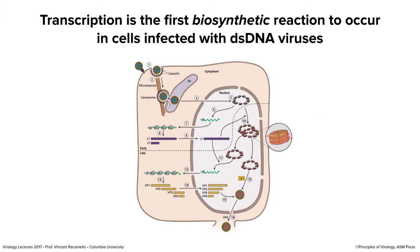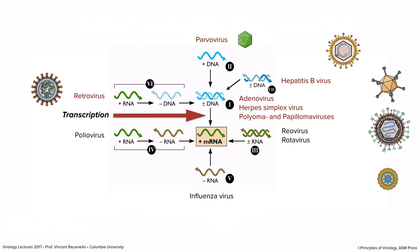The wording is very important: biosynthetic event and double-stranded DNA viruses. Because there are other viruses that don't have truly double-stranded DNA genomes. The double-stranded DNA viruses include adenoviruses, herpes simplex, polyoma, papilloma, and many others. The parvoviruses are not double-stranded, the hepatitis B viruses are not fully double-stranded, and retroviruses are RNA viruses — so they have to do other things before they can make mRNA.